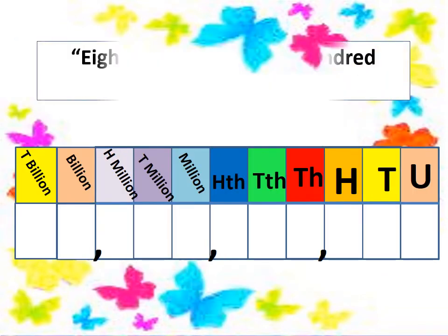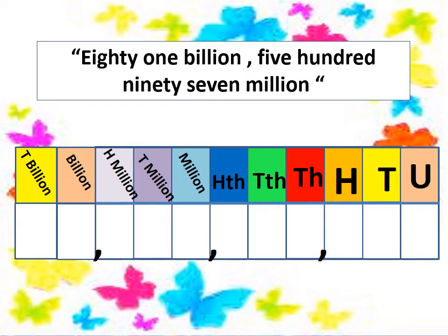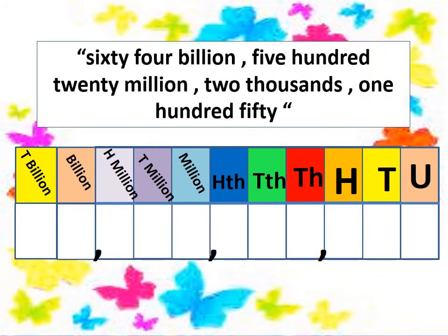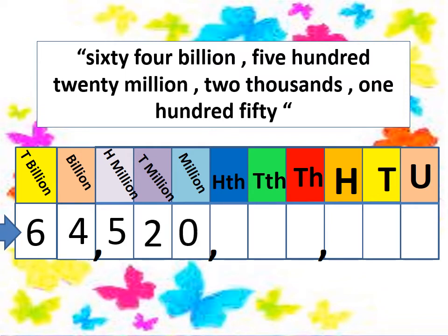Now I have a number in words and want to write it by digits. Eighty-one billion, five hundred ninety-seven million — numbers in the billions home and millions home only. We write 81 in the billions home and five hundred ninety-seven in the millions home, with zeros for the empty places. Another one: sixty-four billion, five hundred twenty million, two thousand, one hundred fifty — 64 in billions, 520 in millions, 002 in thousands, and 150 in units with appropriate zeros.